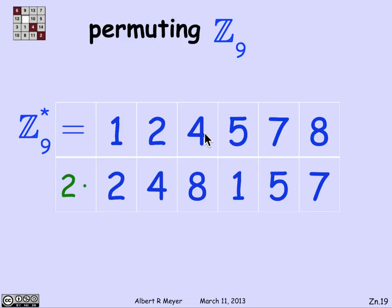2 times 1 is 2. 2 times 2 is 4. 2 times 4 is 8. 2 times 5 is 1, because it's 10 with a remainder of 1. 2 times 7 is 14, translates into 5. 2 times 8 is 16, mod 9 translates into 7. And as claimed, look at this, here's 2, 4, 8, 1, 5, 7. It's the same numbers as 1, 2, 4, 5, 7, 8, just in a different order.